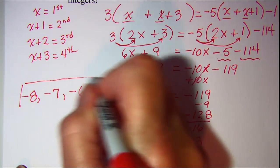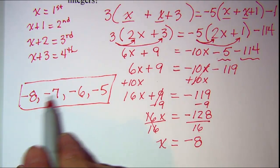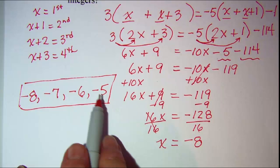So my four consecutive integers are negative 8, negative 7, negative 6, and negative 5.